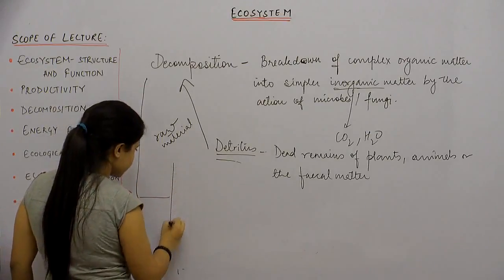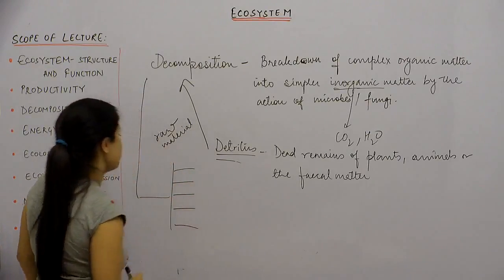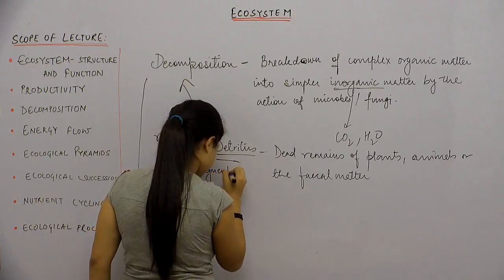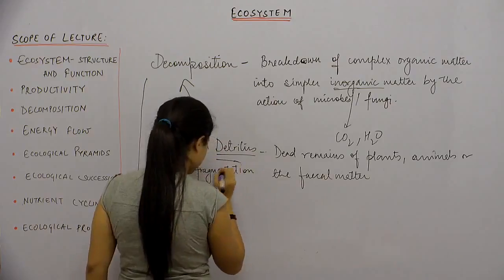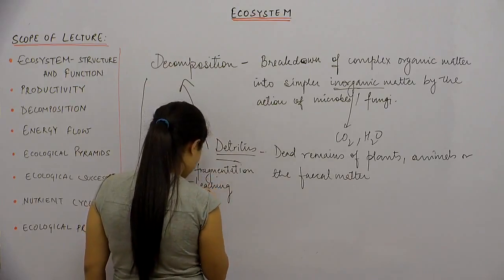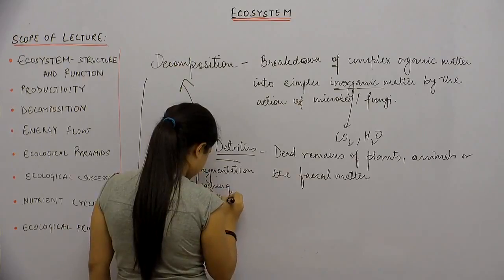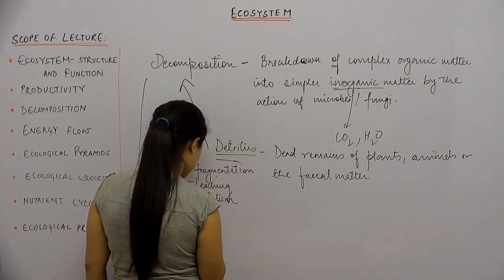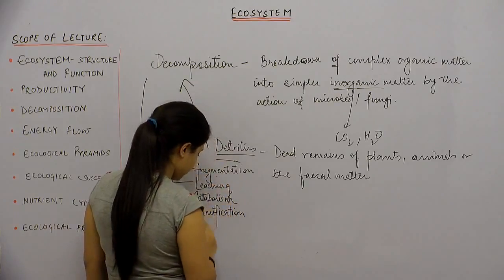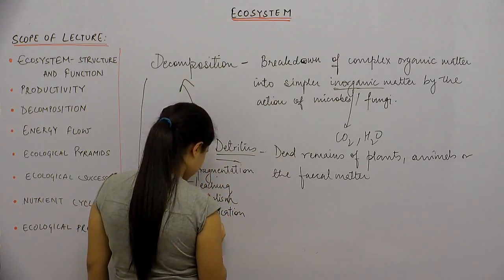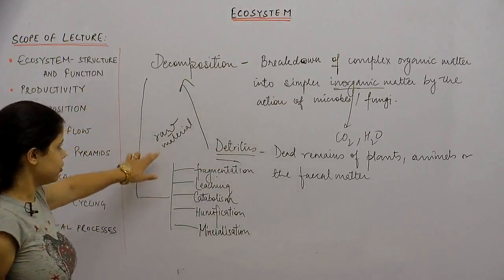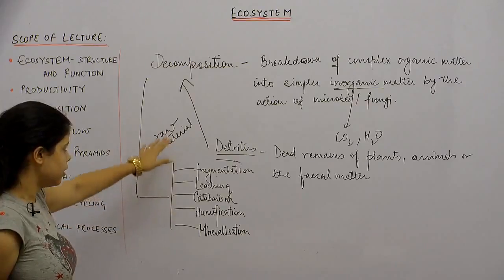Decomposition happens in five steps. The first one is fragmentation. The second one is leaching. The third one is catabolism. The fourth one is humification. And the last one is mineralization. These are the five steps that come under the decomposition process.